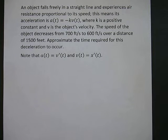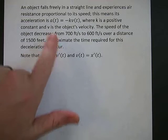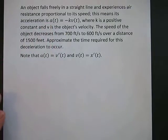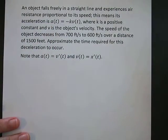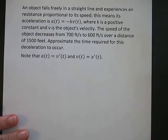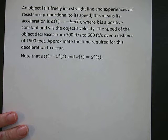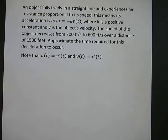An object falls freely in a straight line and experiences air resistance proportional to its speed. This means its acceleration a(t) is equal to negative k times v(t), where k is a positive constant and v is the object's velocity. The speed of the object decreases from 700 to 600 over a distance of 1500. Approximate the time required for this deceleration to occur.